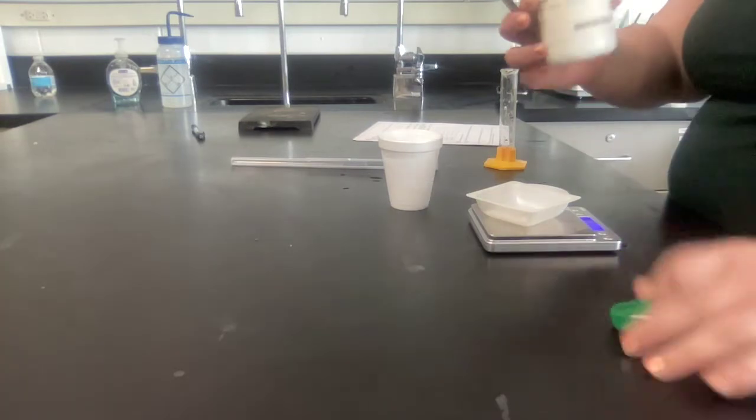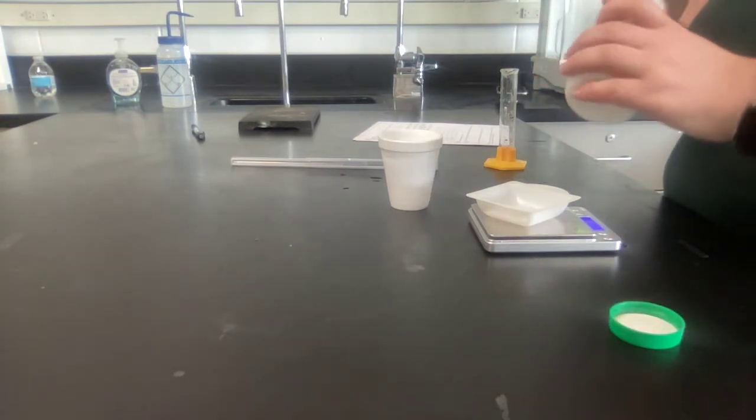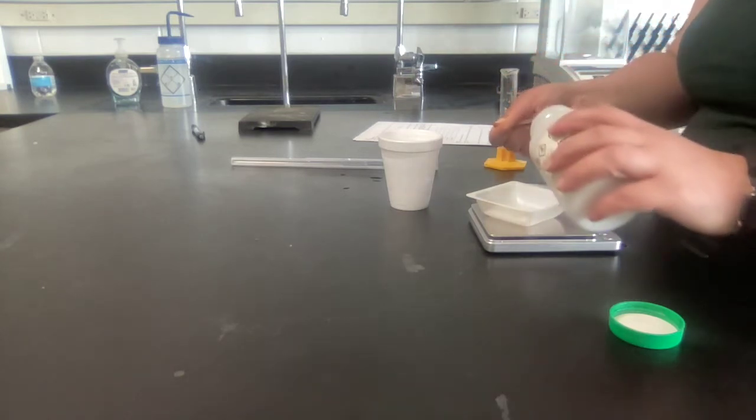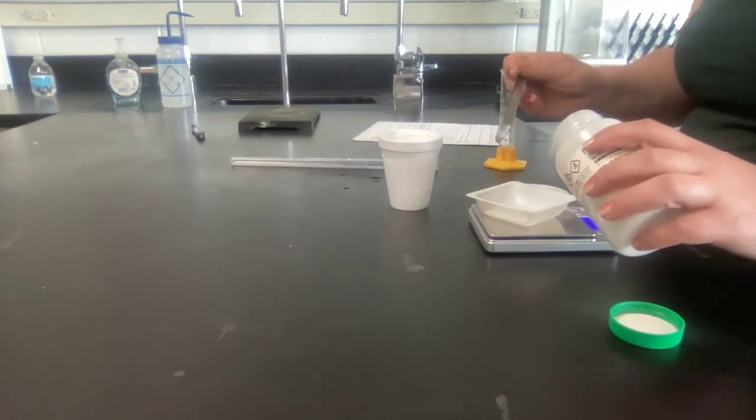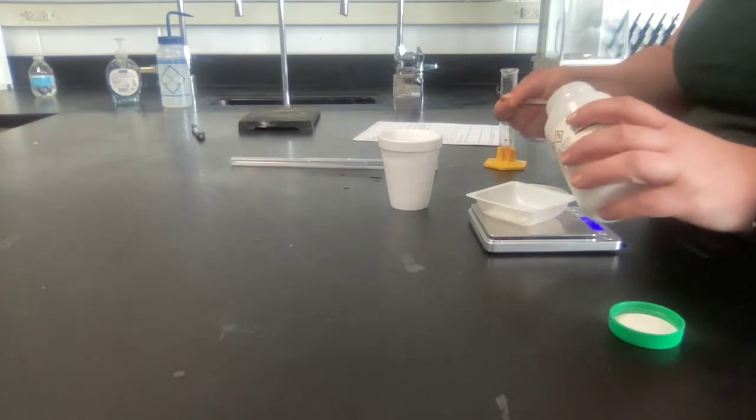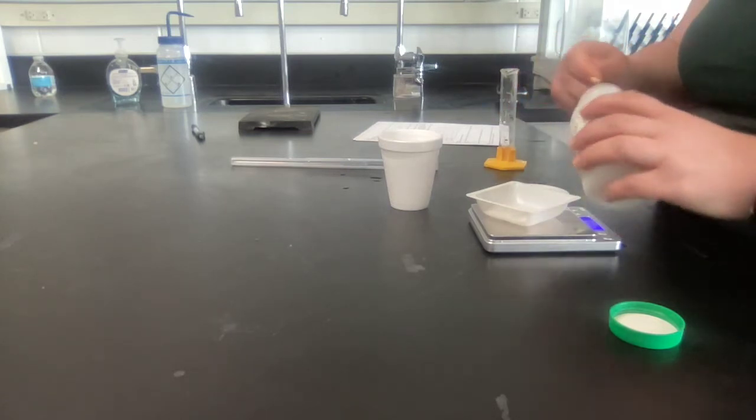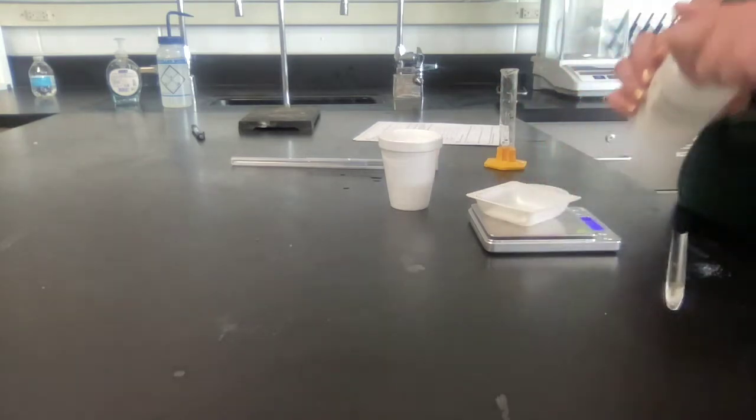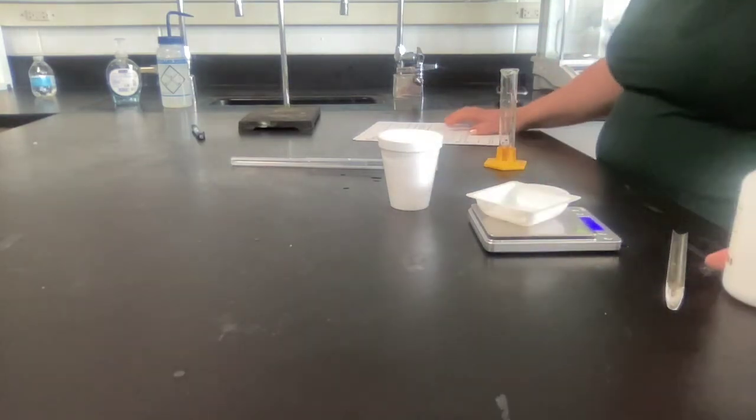Get your ammonium chloride from the front. You can actually probably do this at the front. You're going to do between 1.5 and 2.5 grams. Write down your exact mass. Mine's 1.93, so write down the exact mass.